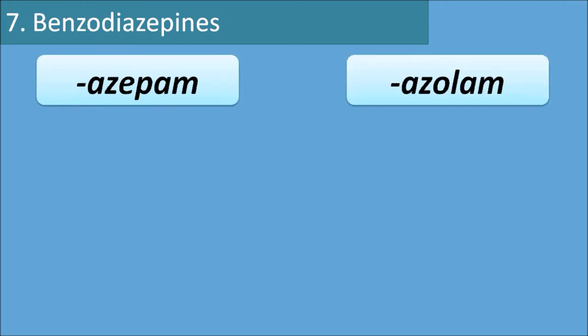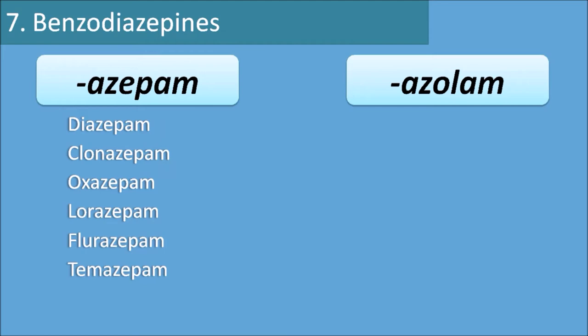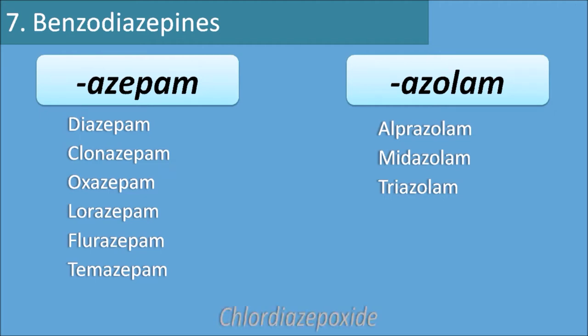The seventh category is benzodiazepines, which have the suffixes 'azepam' and 'azolam'. Drugs with the suffix -azepam include diazepam, clonazepam, oxazepam, lorazepam, flurazepam, and temazepam — most benzodiazepines use this suffix. Fused ring systems like alprazolam, midazolam, and triazolam have the suffix -azolam. One exception is chlordiazepoxide, which has a different suffix.